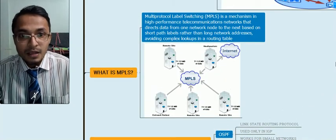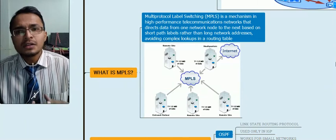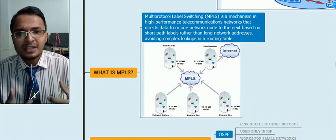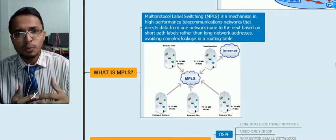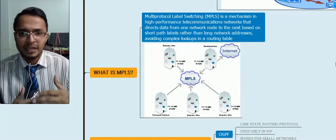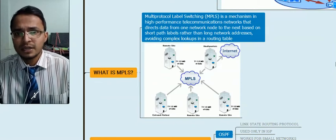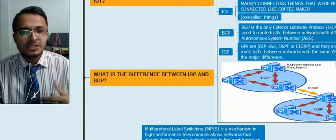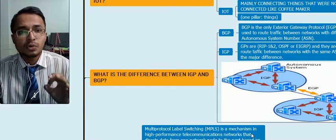Now, what is MPLS? MPLS — Multi-Protocol Label Switching — is used to avoid looking up longer network addresses in routing tables. It provides shorter labels so you can more easily traverse the network. That is the main purpose of using Multi-Protocol Label Switching.